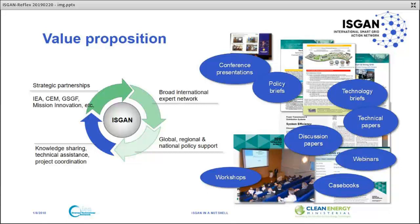So what's the value proposition of ISCAN? We have strategic partnerships with the International Energy Agency, the Clean Energy Ministerial, the World Smart Grid Forum, and Mission Innovation Actions. We also aim to have a broad international expert network with global, regional, and national policy support for different government policies, and we do a lot of knowledge sharing, technical assistance, and project coordination.